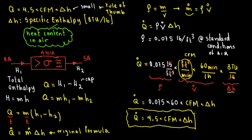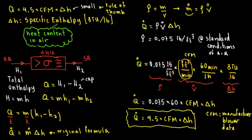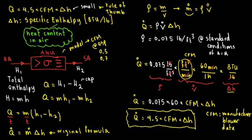Now let's recap. You can find CFM from the manufacturer specs — specifically the blower data. If you have the model number of the furnace, that gives you a table of CFM at certain static pressures, usually 0.5 or 0.7 inches static pressure, and based on that you can obtain the CFM.